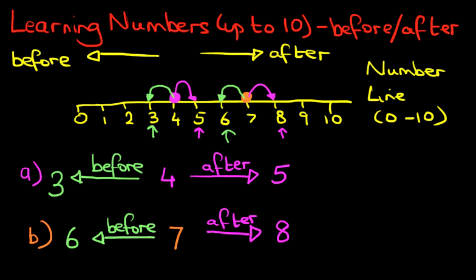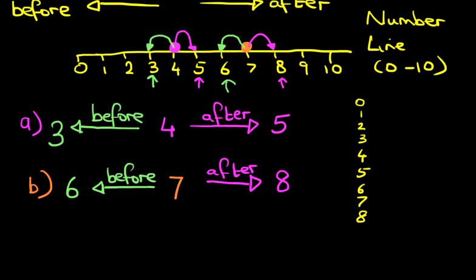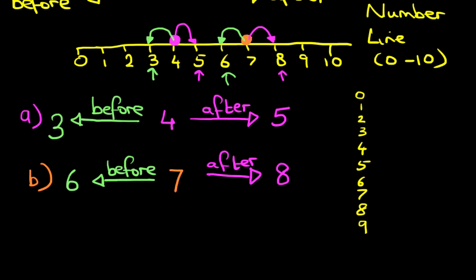Now you can do this with the number line as we've said. You can also do this simply by just writing all the numbers down. Let's do that over here. Start off at 0, 1, 2, 3, 4, 5, 6, 7, 8, just going to scroll down a little here, and we've got 9 and 10.